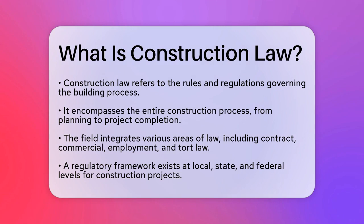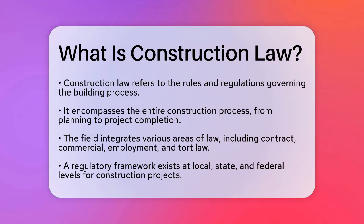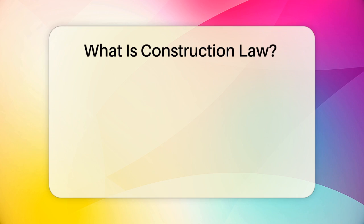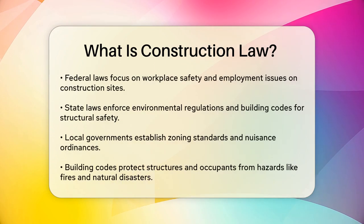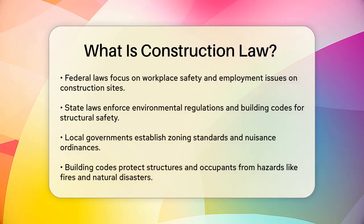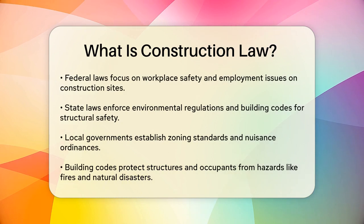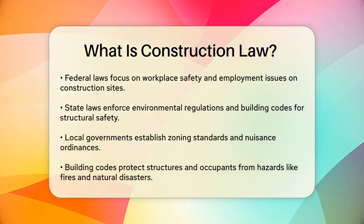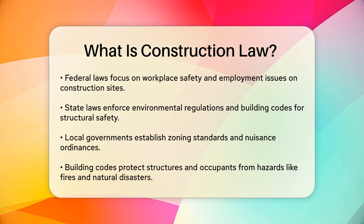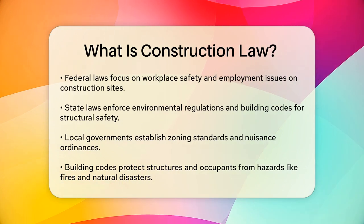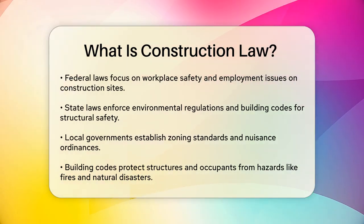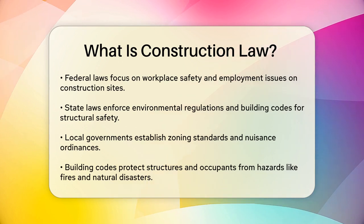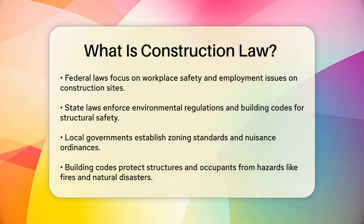One of the key aspects of construction law is the regulatory framework. This framework is made up of local, state, and federal laws that dictate how construction projects must be carried out. For instance, federal laws govern workplace safety and employment issues on construction sites. State laws impose environmental regulations and building codes, which are crucial for ensuring the structural integrity and safety of buildings. Local governments set standards for zoning and nuisance ordinances, such as noise restrictions or the use of heavy equipment.